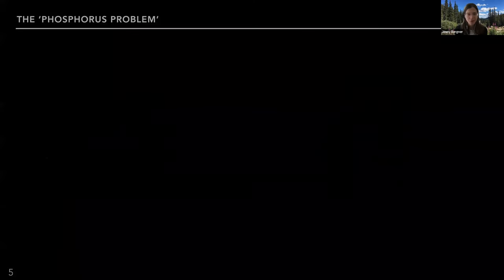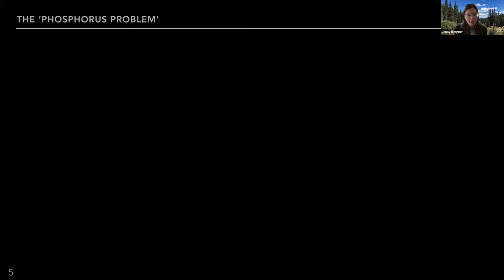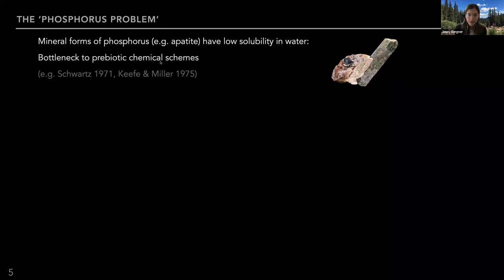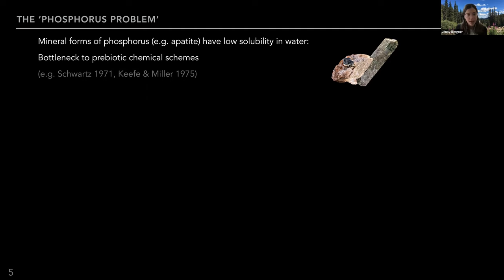Phosphorus is an especially interesting problem because when prebiotic chemists try to understand the ingredients in early Earth scenarios for building biomolecules, it turns out that mineral forms of phosphorus — like apatite — have very low solubility in water. This is one of the main mineral reservoirs of phosphorus, and it can be a big bottleneck to prebiotic chemical schemes if you cannot dissolve enough phosphorus into solution to react with other prebiotic building blocks. A couple of strategies have emerged to explain how to get enough accessible phosphorus into prebiotic chemical schemes.